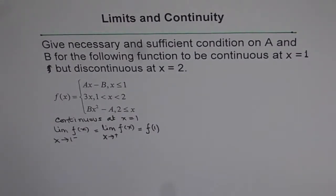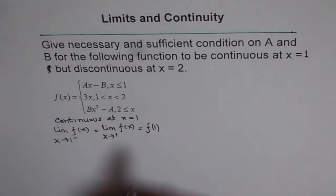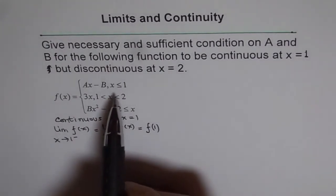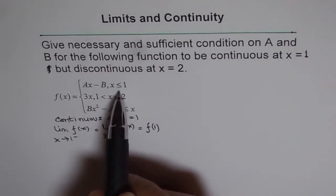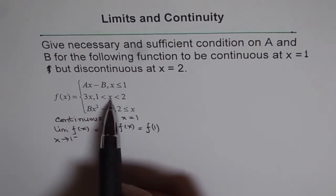So only then the function is continuous. Otherwise, the function is not continuous. So we'll plug this condition here. We see the function values Ax minus B when x is less than 1, that means when we are approaching from the left side, and it is 3x when you are approaching from the right side.